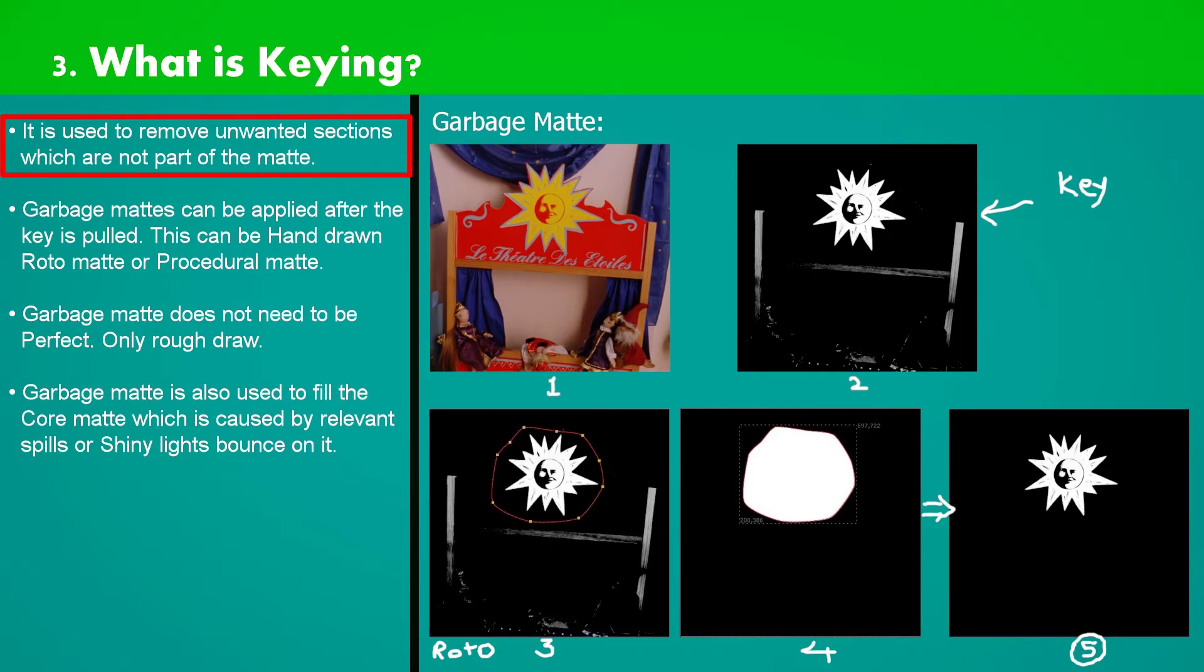Garbage matte is used to remove unwanted sections which are not part of the mat or key. Garbage mattes are applied after the key is pulled.